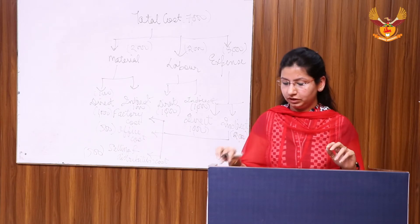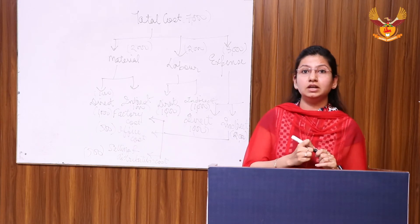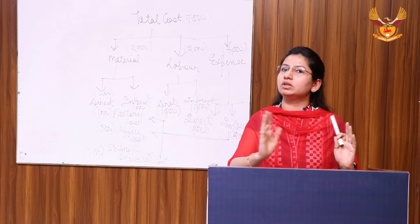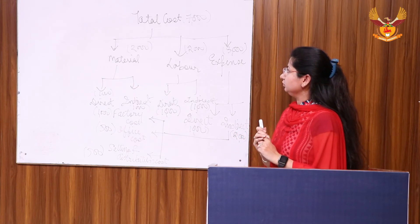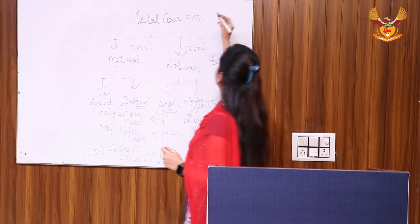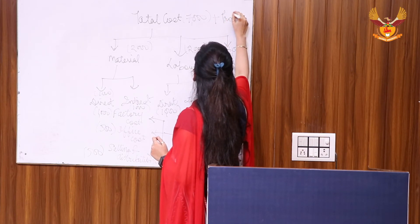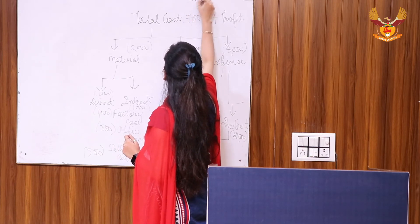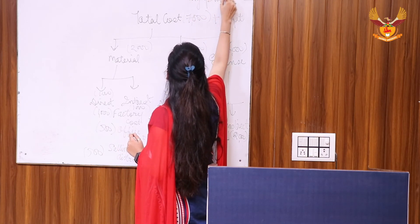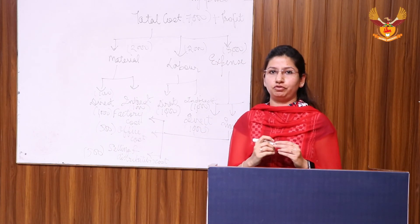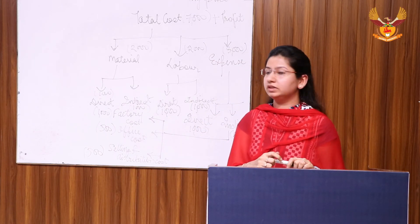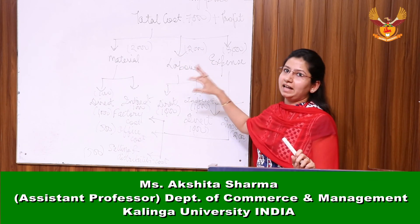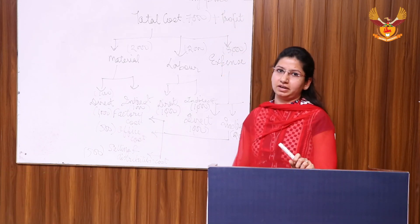When it comes to selling price, you add profit to the total cost. You can add profit in two ways: either as a percentage of sales or as a percentage of total cost. So, total cost plus profit will give you the selling price, and this can further be divided by the number of units. In conclusion, total cost is a merger of material, labour, and expenses, and when profit is added, it gives you the selling price. Thank you.